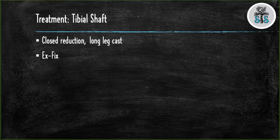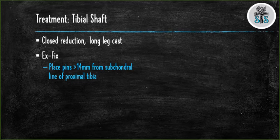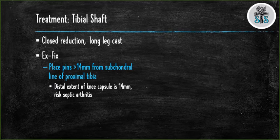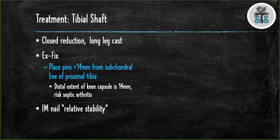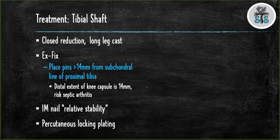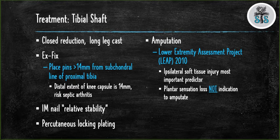Operative fixation can consist of external fixator, intramedullary nailing, plates, or amputation depending on the severity of injury. External fixators will be used if the soft tissue is too severe or if the patient is unable to tolerate definitive fixation. The LEAP study showed that soft tissue injury is the most important predictor of whether or not the patient gets an amputation, and that the lack of plantar sensation was not an indicator to amputate.